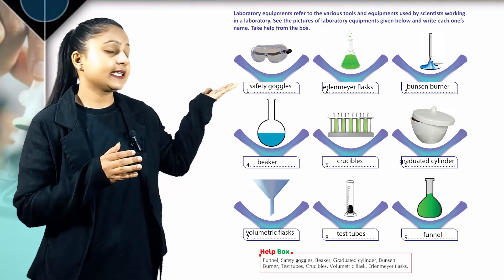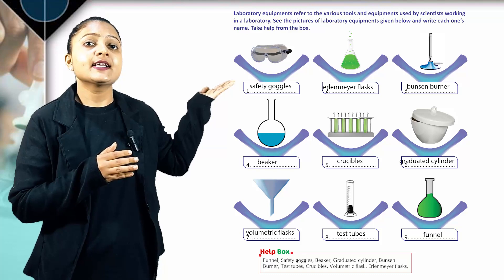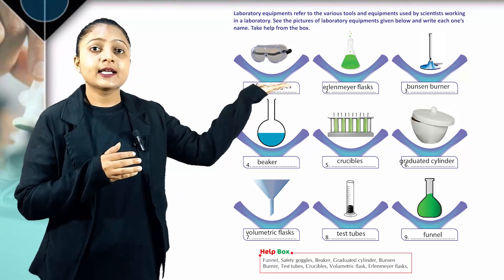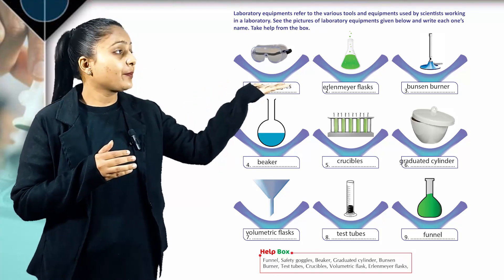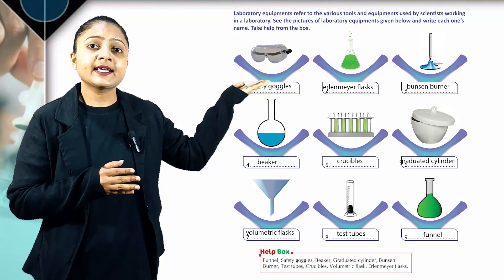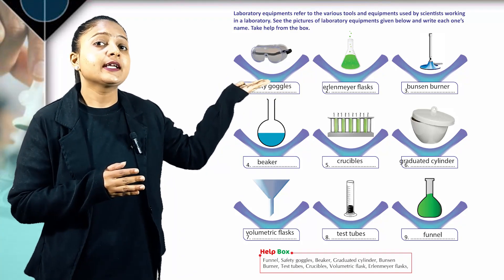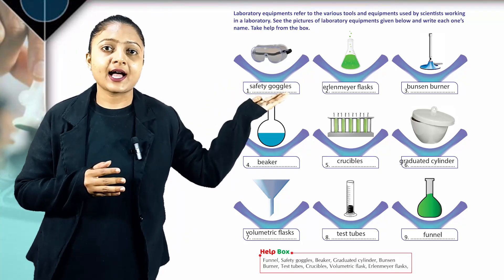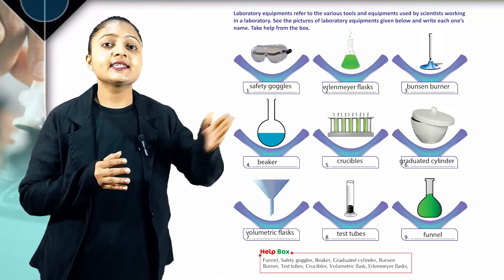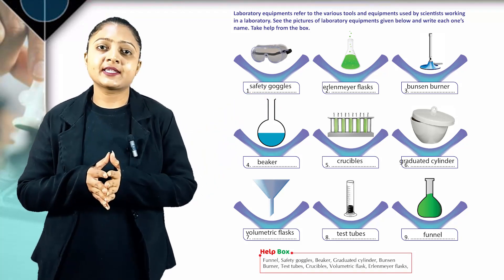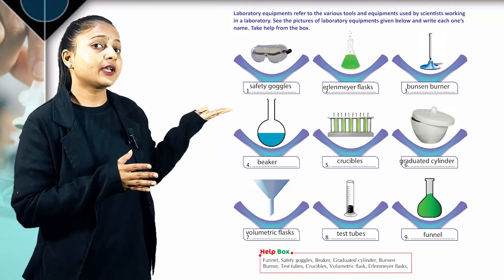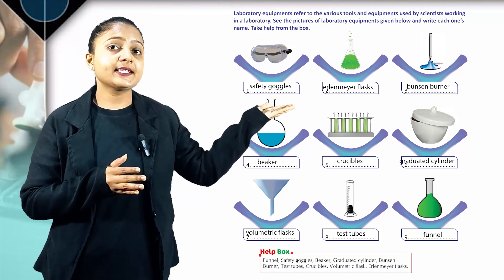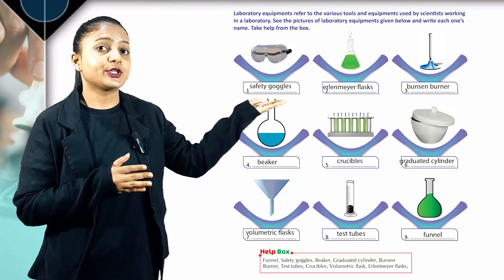Let's first see this picture. This is safety goggles. The second picture is of Erlenmeyer Flask. Third one is Bunsen burner. Fourth one is beaker. Fifth one is test tube.